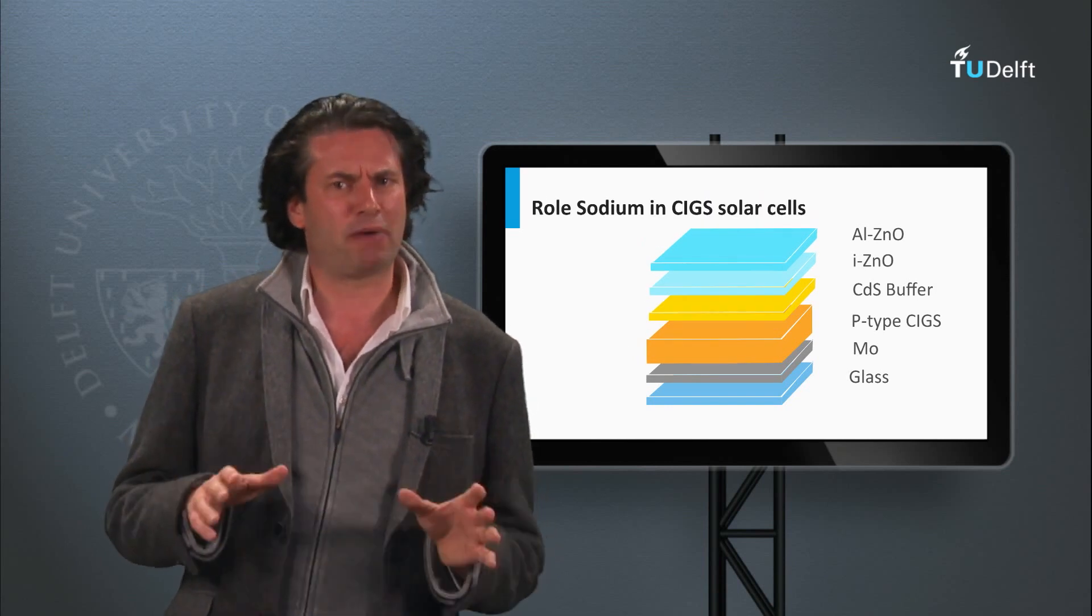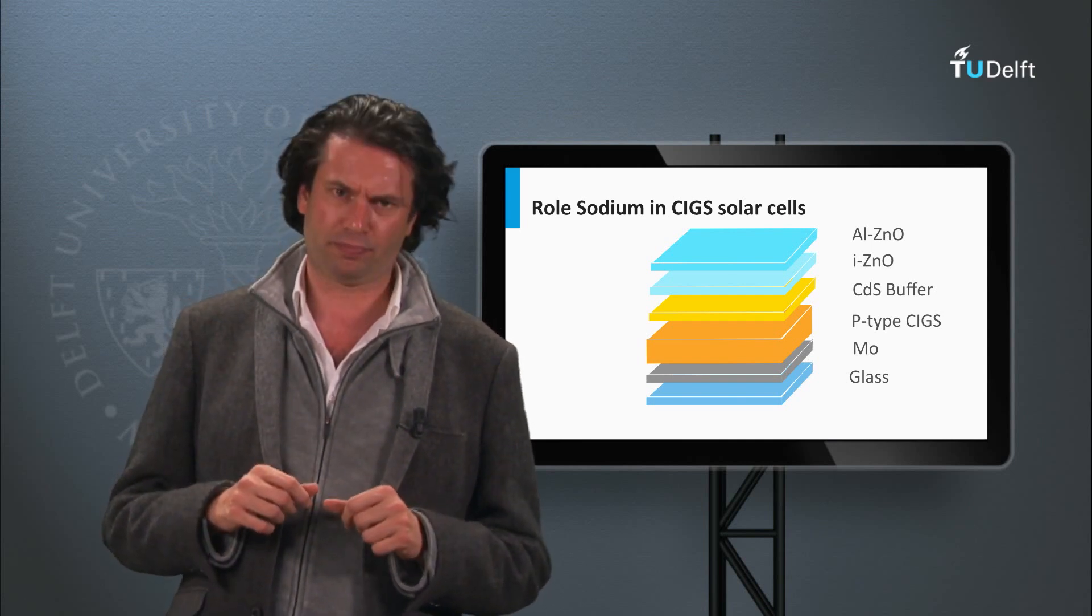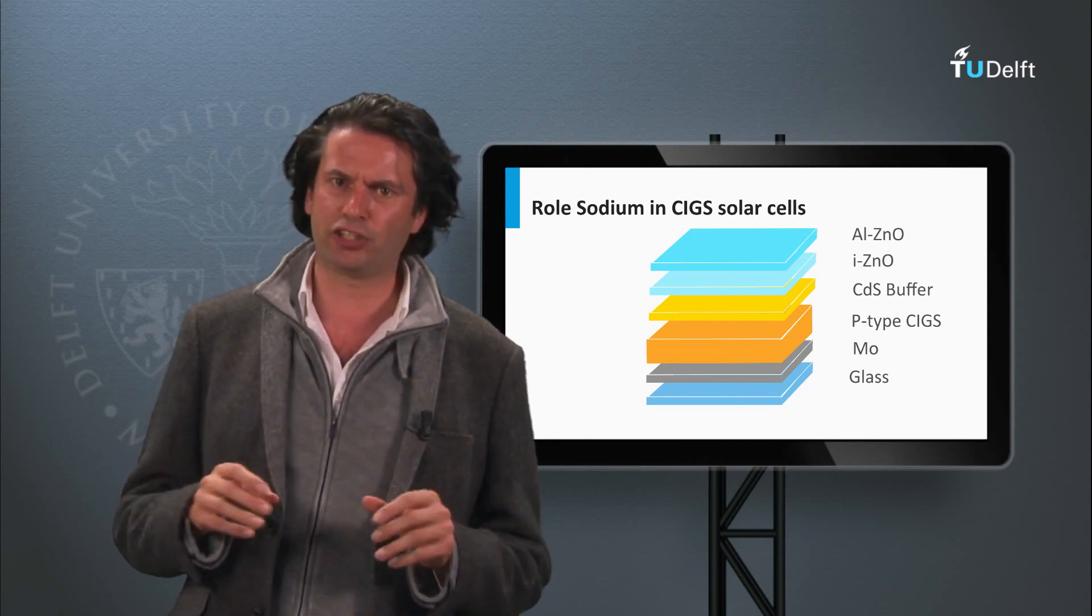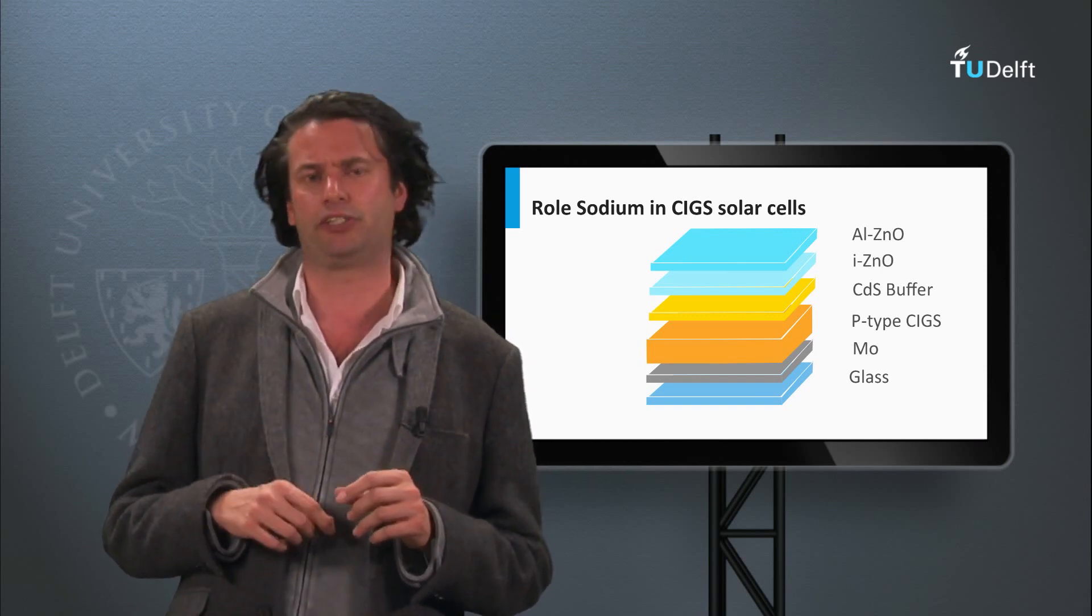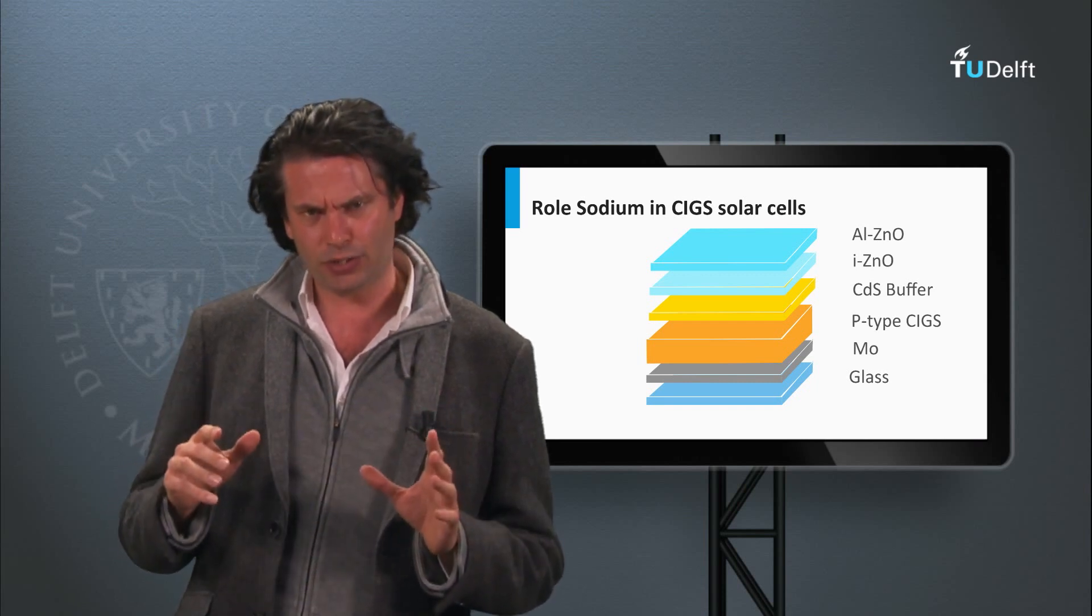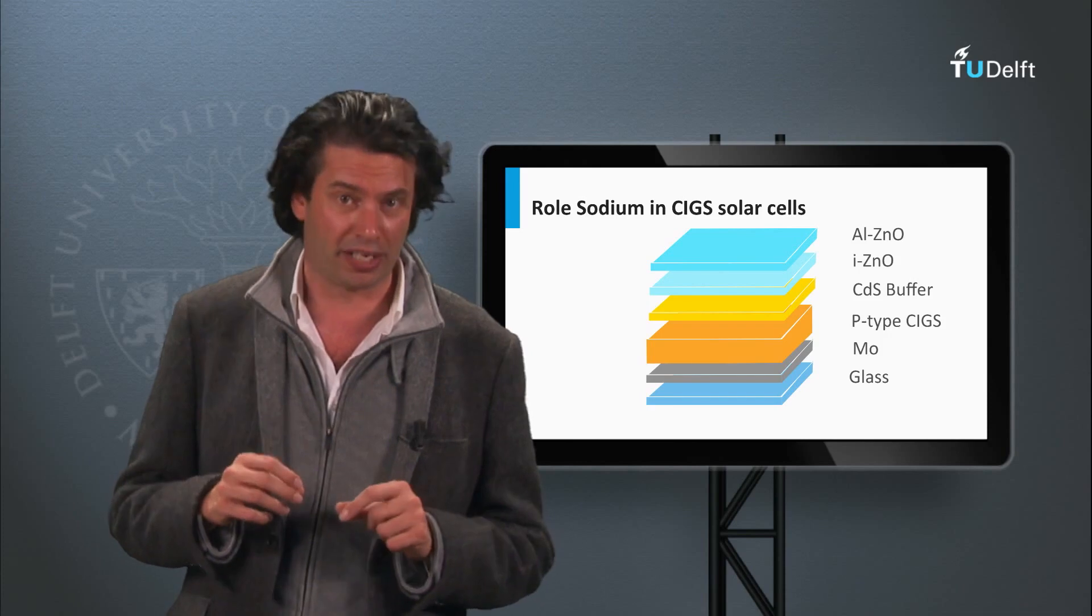One of the important aspects of CIGS solar cells is the role of sodium. Low contamination of sodium appears to increase the conductivity in the p-type CIGS materials. It leads to a welcome texture and an increase in the average grain size.